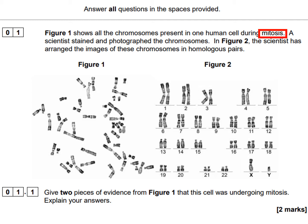The scientist stained and photographed the chromosomes, shown in figure one on the left. In figure two on the right-hand side, the scientist has rearranged the images from figure one to put them into homologous pairs in descending order, from the biggest chromosome — chromosome one — down to the smallest, chromosome 22, and then X and Y, the sex chromosomes. The question asks for two pieces of evidence from figure one that this cell was undergoing mitosis, and to explain your answers. Each mark point involves one feature from figure one plus an explanation of why that feature indicates mitosis.